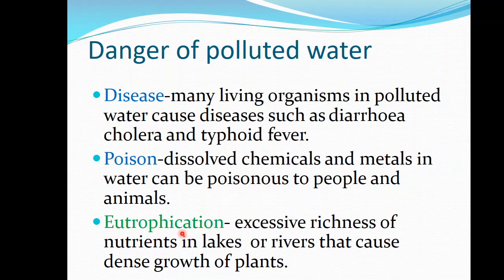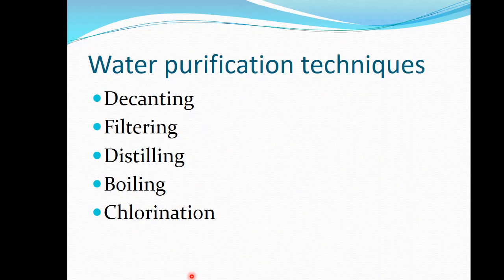Polluted water can also cause eutrophication. Eutrophication is simply the excessive richness of nutrients in lakes or rivers that causes dense growth of plants. The water might have too many nutrients, and these nutrients can then make plants grow rapidly in those lakes and rivers.